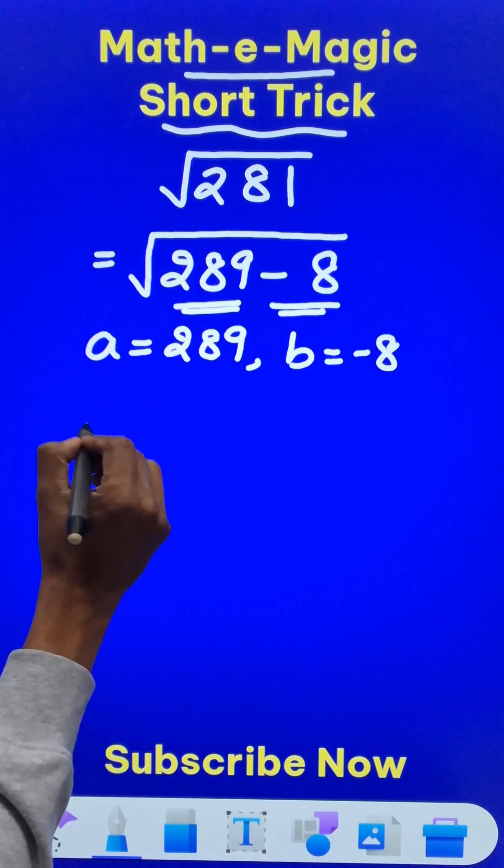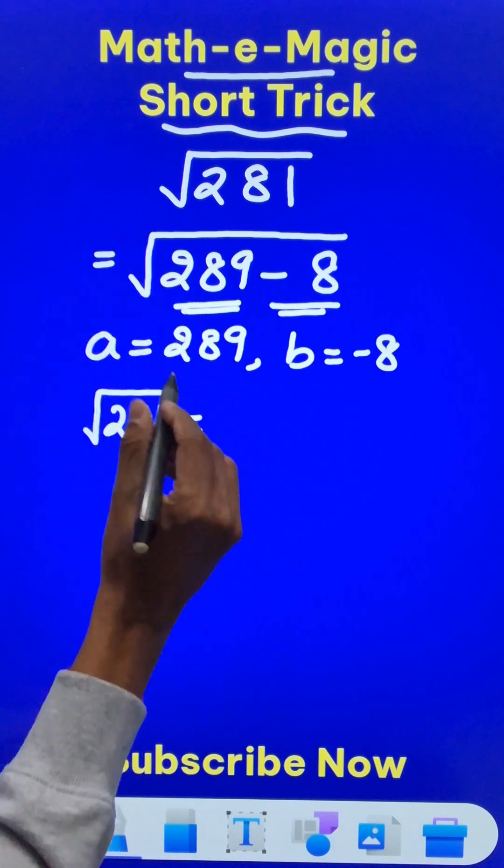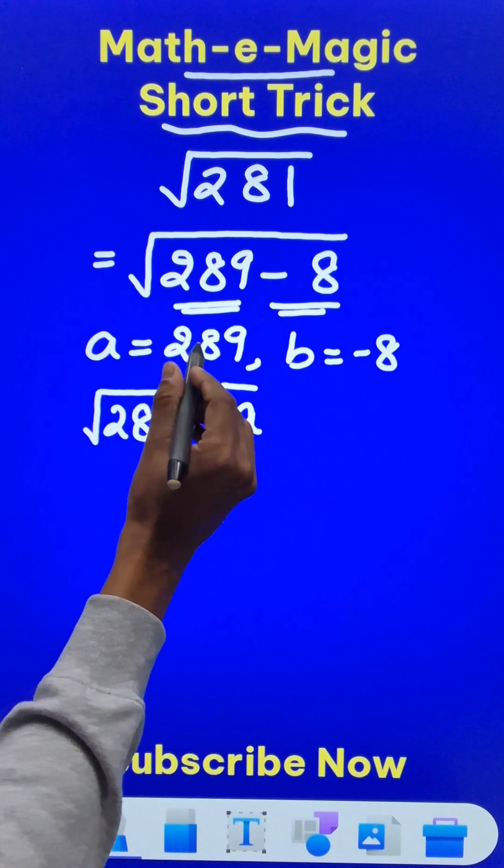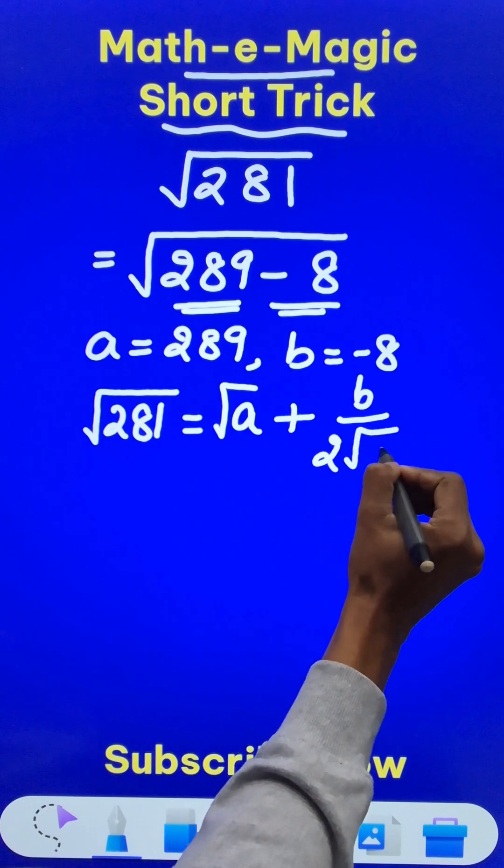Now to find the square root of 281, we will be using this logic. We will have square root of the number a, that is square root of this perfect square number, plus b upon twice of square root of a.